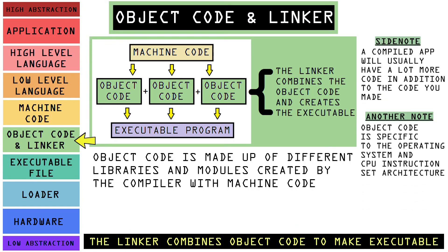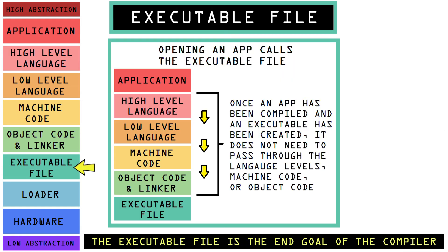Now we are at the object code and linker level. In the process of creating an executable file, the machine code is grouped and organized into several modules and libraries called objects. The object code is still machine code, and all the objects will be combined into a single executable file by the linker, which also allocates memory space for each object. Once this is complete, we now have an executable application.